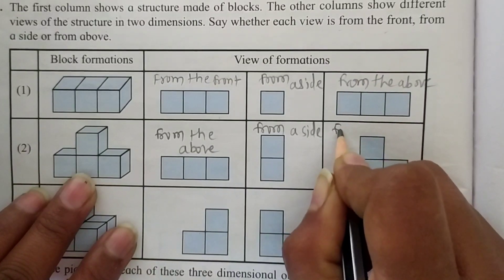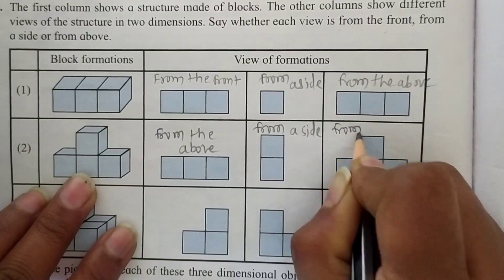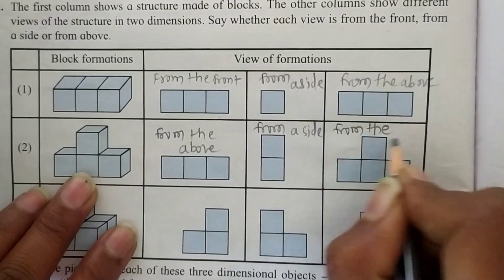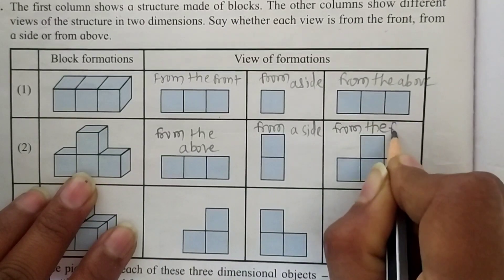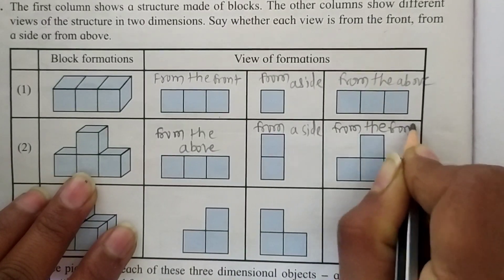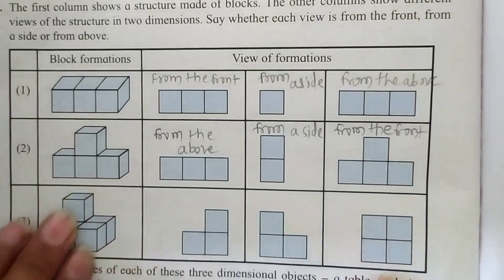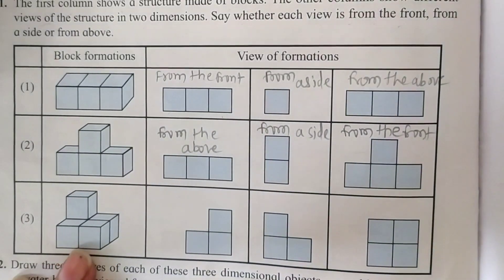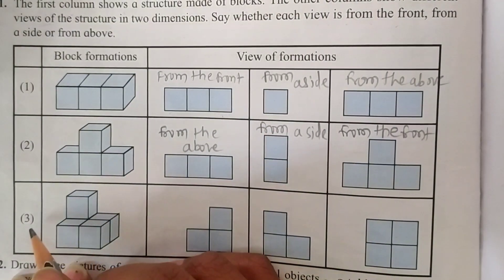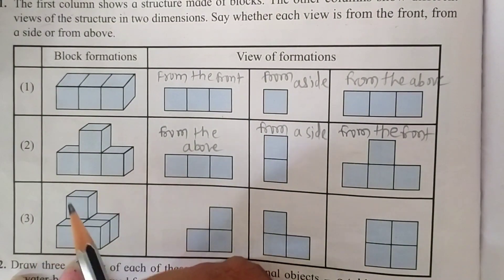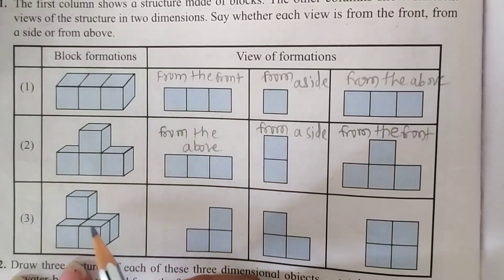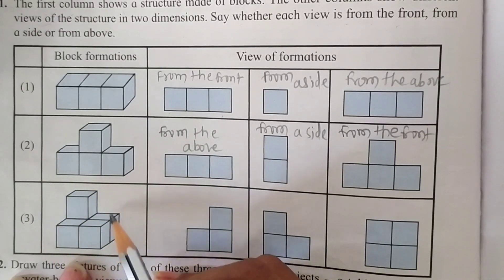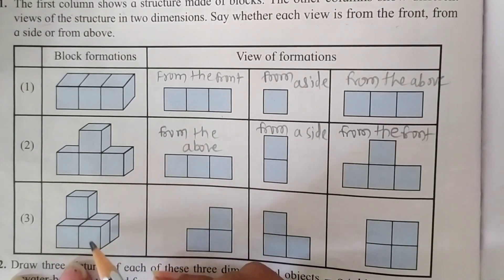So right here: from the front. Now look at the third question — the block information is given here.